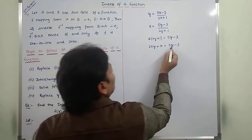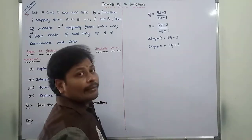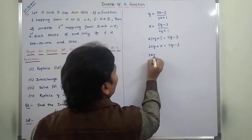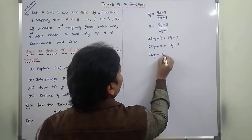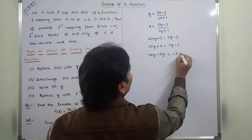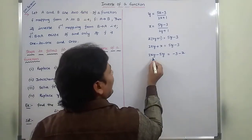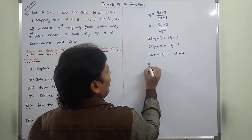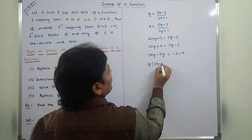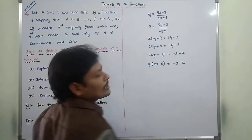Next, this 5y can be taken to the left hand side, and x can be taken to the right hand side. So therefore, 2xy minus 5y is equal to minus 3 minus x. Now we have to take y as common. After taking y common, y times 2x minus 5 is equal to minus 3 minus x.